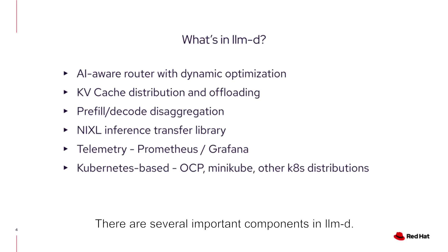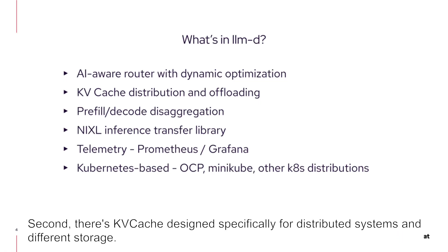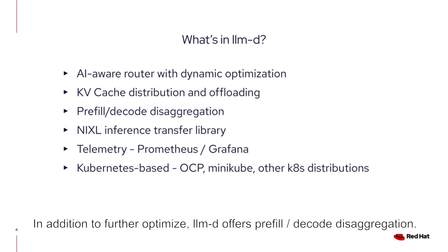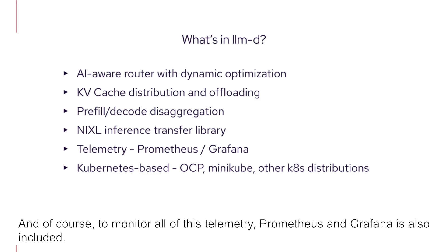There are several important components in LLMD. First, it includes an AI-aware router with dynamic optimization based on the request and state of the cluster. Second, there's KVCache, designed specifically for distributed systems and different storage. To further optimize, LLMD offers pre-fill and decode disaggregation, enabled in part thanks to the Nixle transfer library as transport. And to monitor all of this telemetry, Prometheus and Grafana are also included.